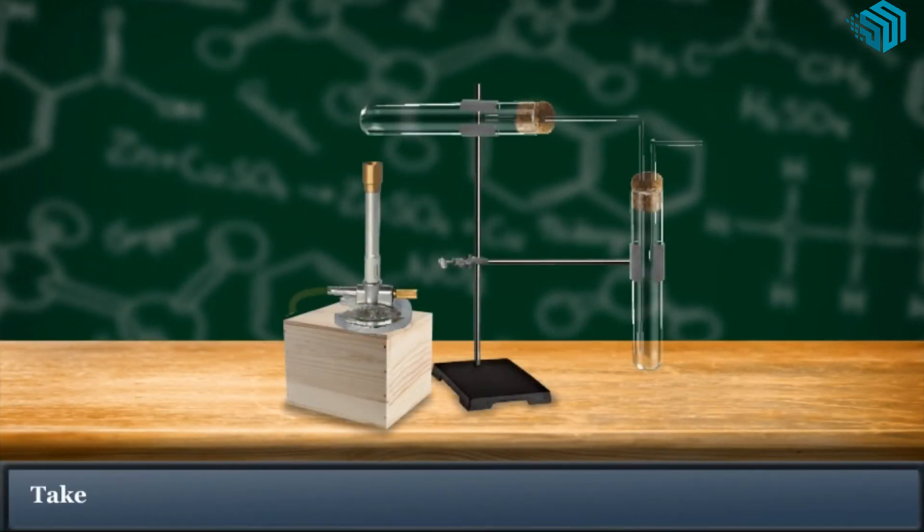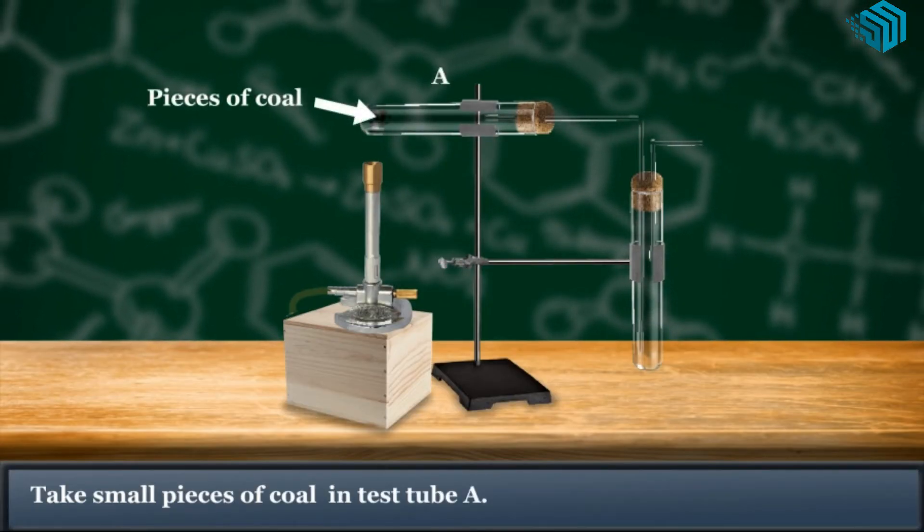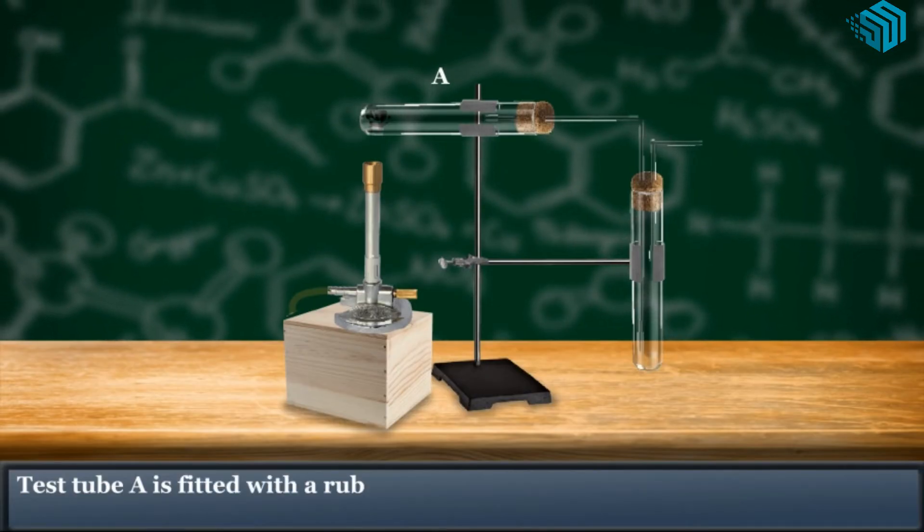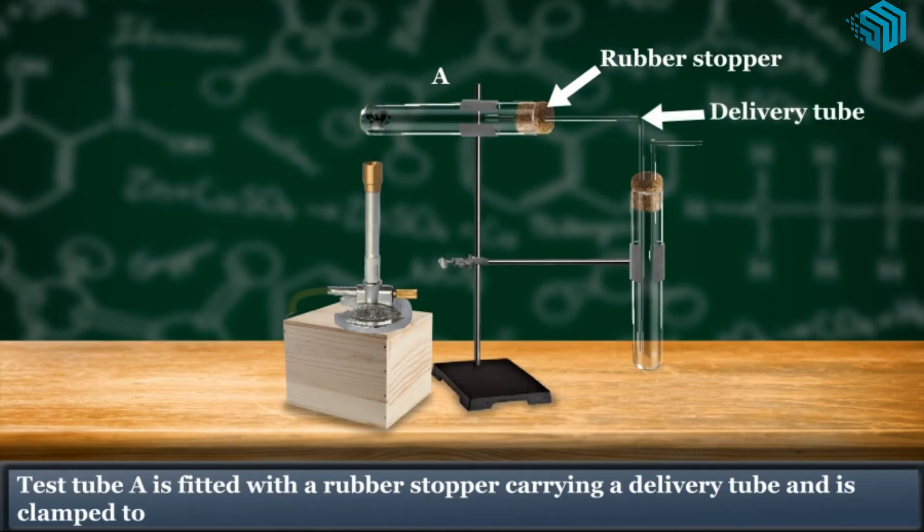The Procedure: Take small pieces of coal in test tube A. Test tube A is fitted with a rubber stopper carrying a delivery tube and is clamped to the stand.